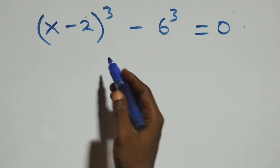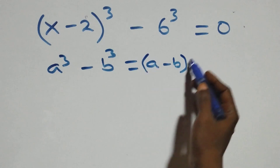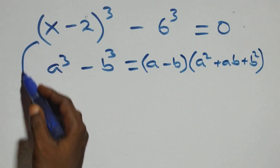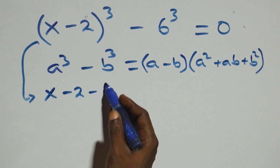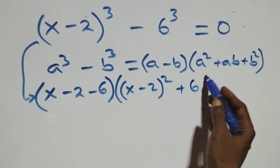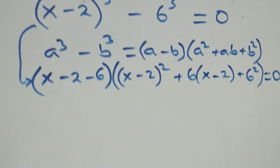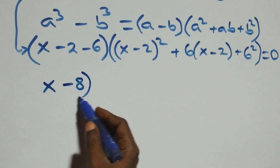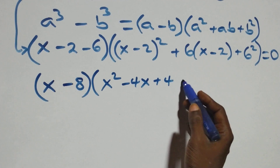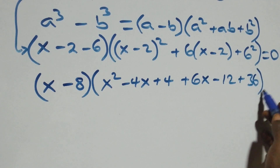Solving the second case: a cubed minus b cubed equals a minus b in brackets, times a squared plus ab plus b squared. This becomes x minus 2 minus 6, in brackets, times x minus 2 squared plus 6 times x minus 2 plus 6 squared, equals to 0. That is x minus 8 in brackets, times x squared minus 4x plus 6x, giving plus 2x, then plus 6x minus 12 plus 36, equals to 0.